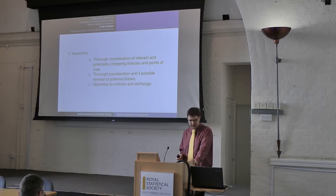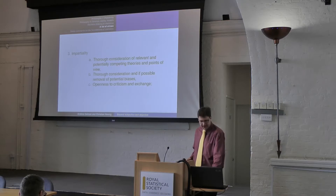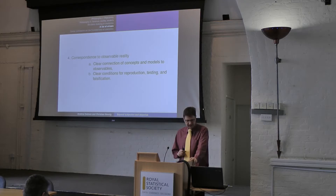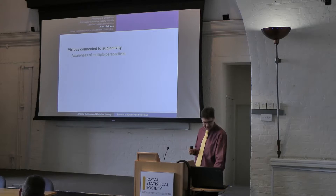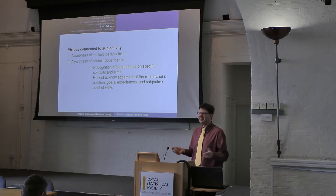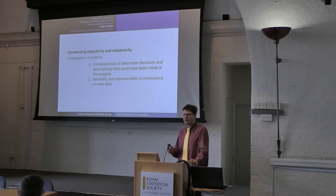Then consensus: communication and consensus is very important — accounting for relevant knowledge and existing related work, following generally accepted rules where possible and reasonable, and provision of rationales for consensus and unification — for example, suggesting principles for constructing priors from information. Impartiality: thorough consideration of relevant and potentially competing theories and points of view, thorough consideration and removal of potential bias coming in by individual observers, and openness to criticism and exchange. Then, because we don't want to be frustrated by reality: correspondence to observable reality — clear connection of concepts and models to observables, and clear conditions for reproduction, testing and falsification.